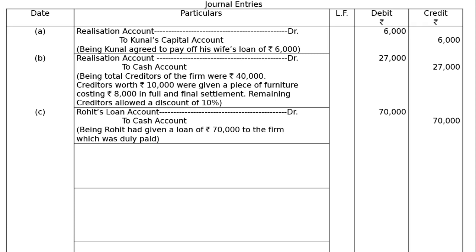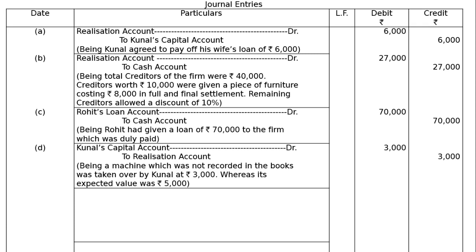Part D: A machine which was not recorded in the books was taken over by Kunal at Rs.3,000, whereas its expected value was Rs.5,000. The asset is not on the debit side since it's unrecorded; taking over is on the credit side of the Realization Account. Entry: Kunal's Capital Account debited to Realization Account Rs.3,000. Only the actual value at which it was taken over is considered — the expected value of Rs.5,000 is irrelevant.